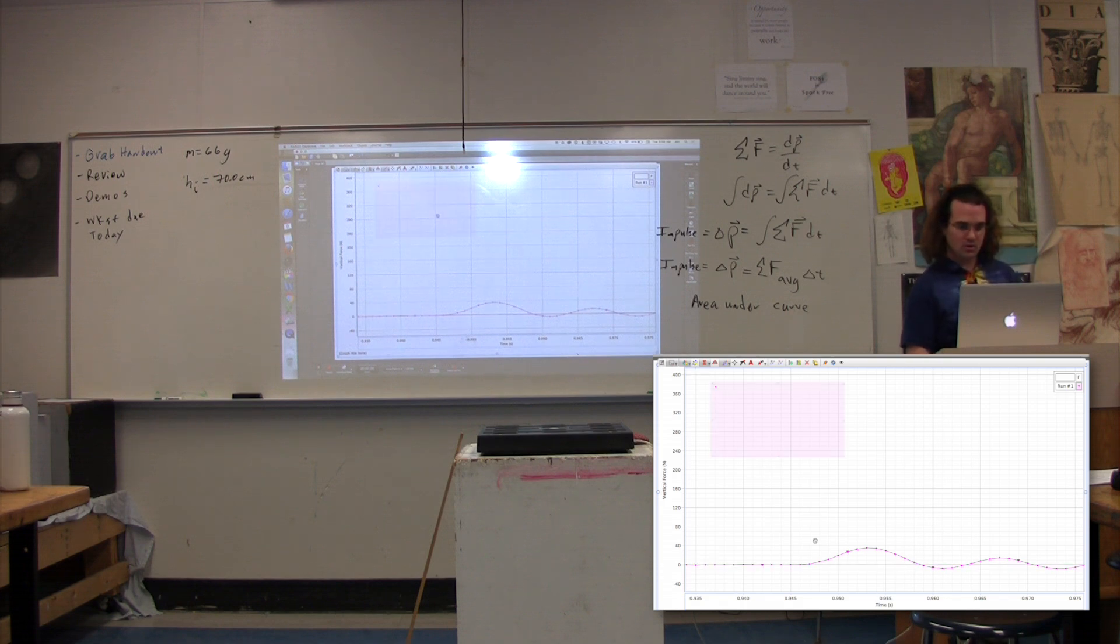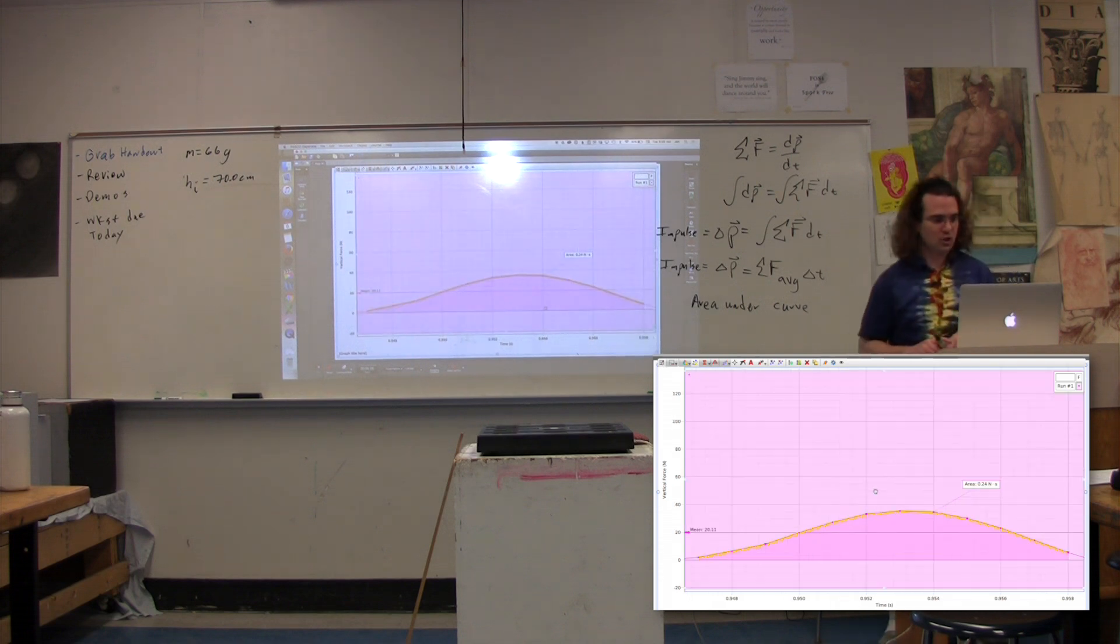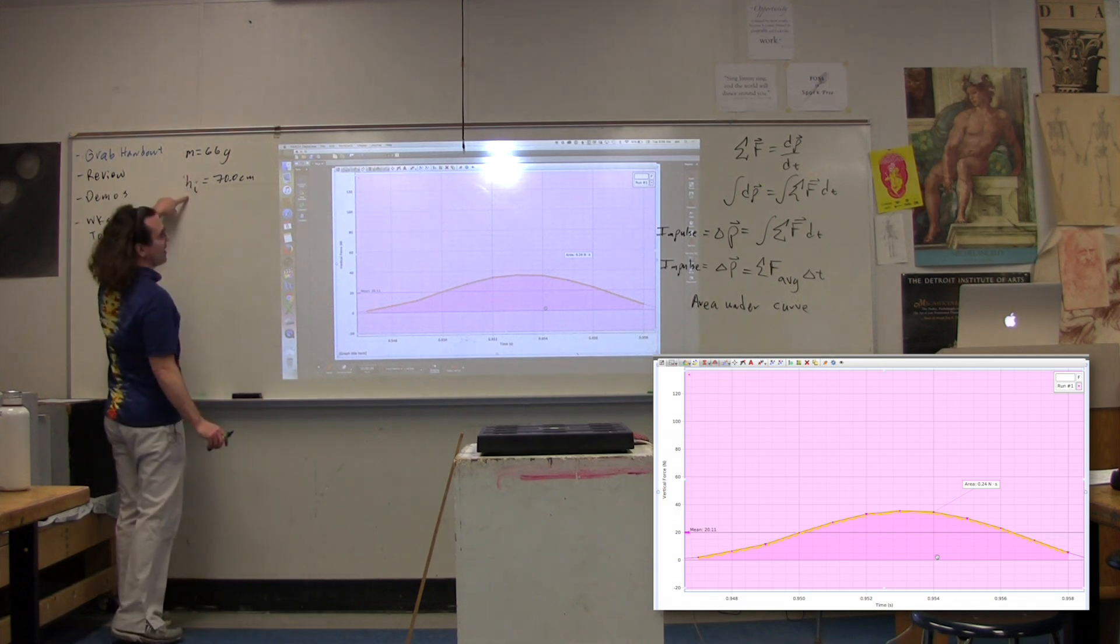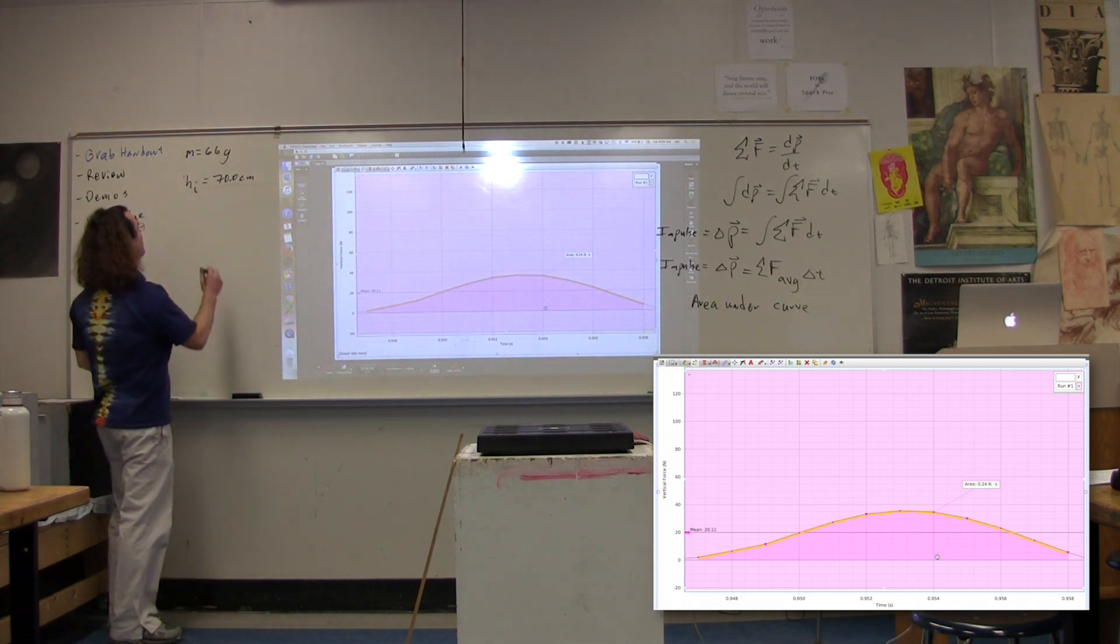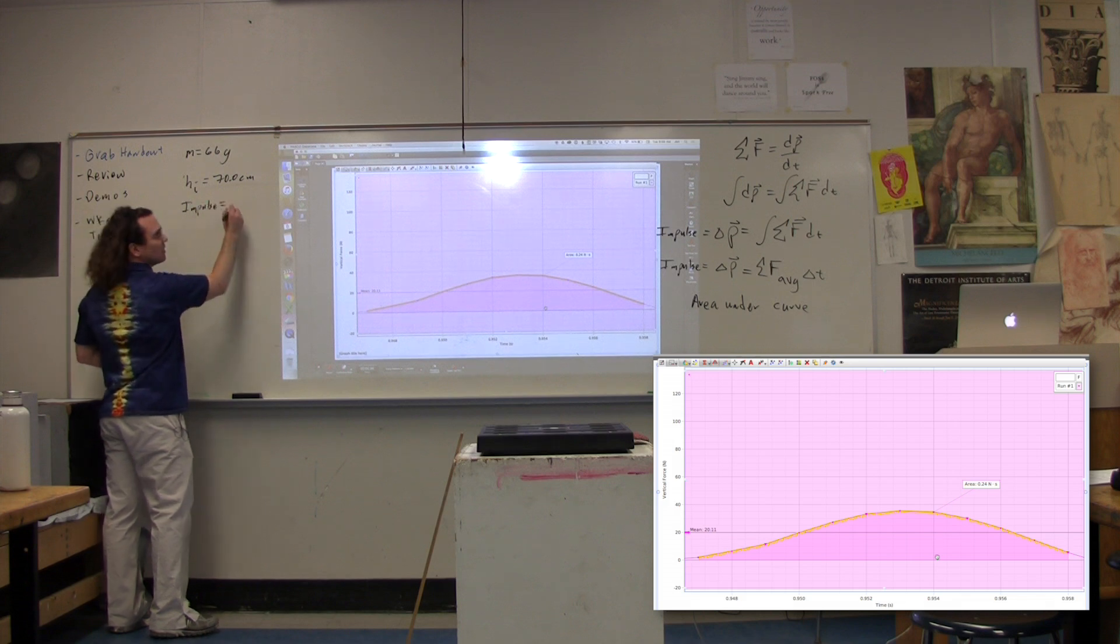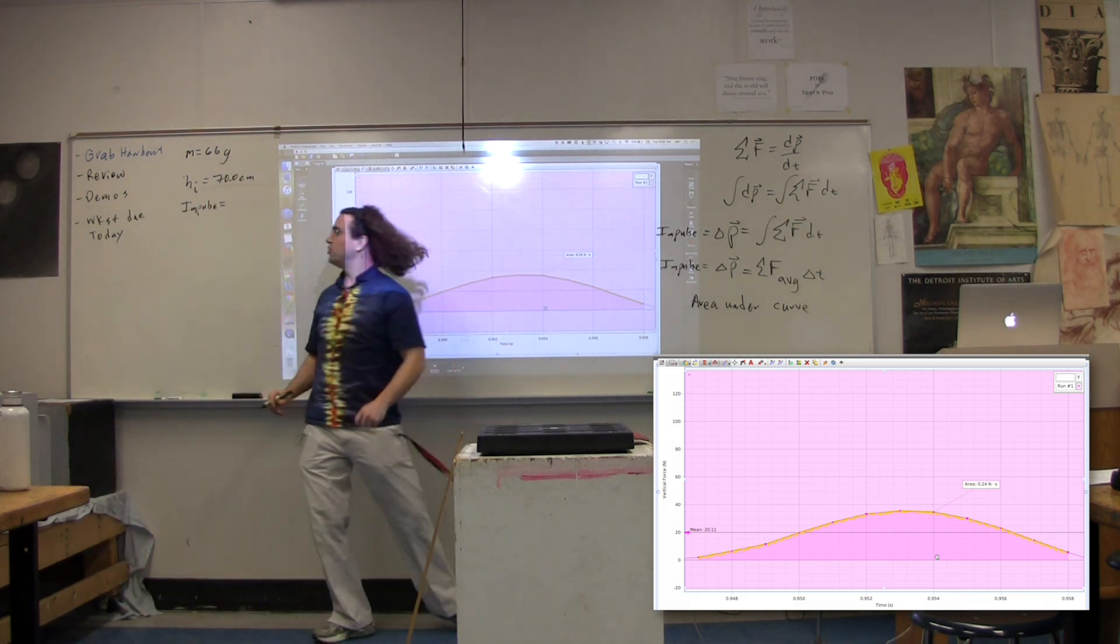We're going to highlight just our collision right here, which is this piece. The information we have so far: the mass is 66 grams, height initial of 70 centimeters. We have the impulse, which is the area under the curve, which is 0.24 newton seconds.